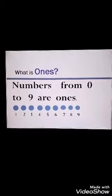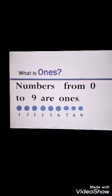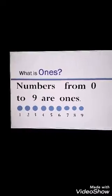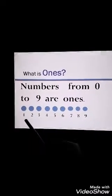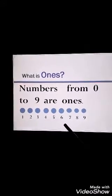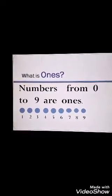First we have to come on ones. What is ones? Numbers from zero to nine are ones. You can see on your screen some circles: that is one, two, three, four, five, six, seven, eight, nine. These are ones.